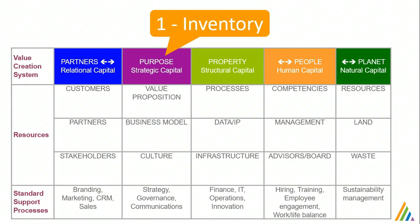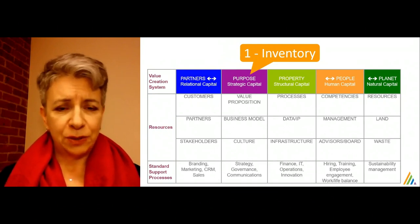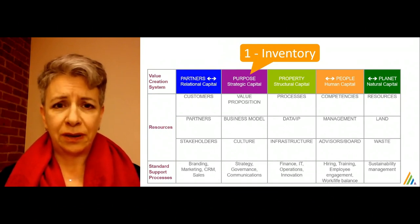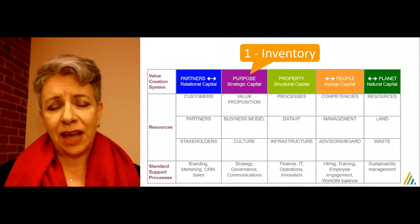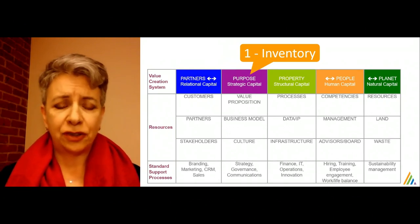Every organization needs key competencies from its people, so listing those here is very helpful and important. Then, of course, what kind of natural resources do you use? And you can go down in the next rows and fill in more about your different kinds of partners, suppliers, society, governments, things like that — your stakeholders.